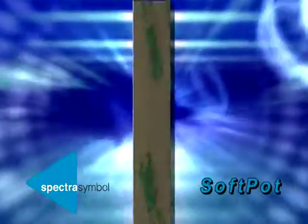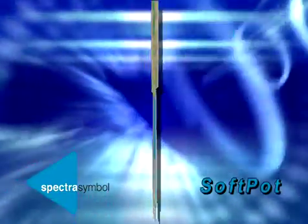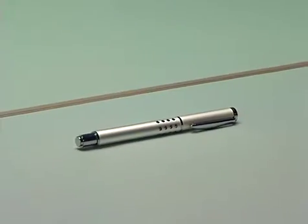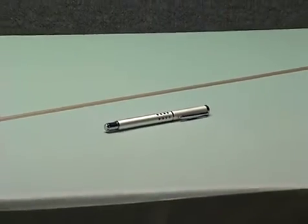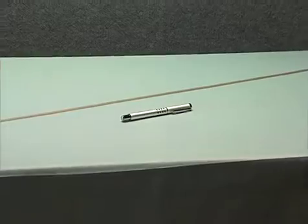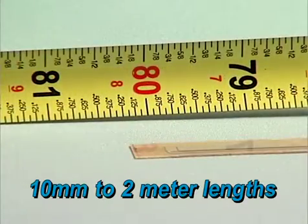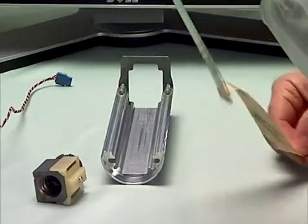With its simple and elegant design, the Spectra Symbol Soft Pot sensor has a form factor of less than half a millimeter in height and is produced in lengths from 10 millimeters to 2 meters.